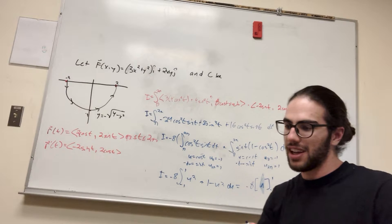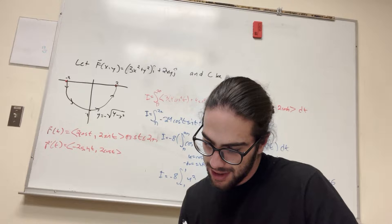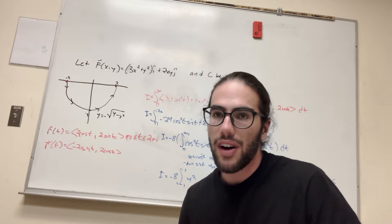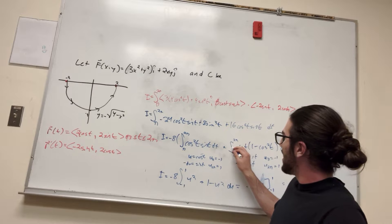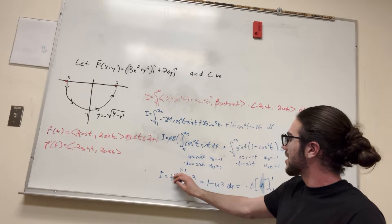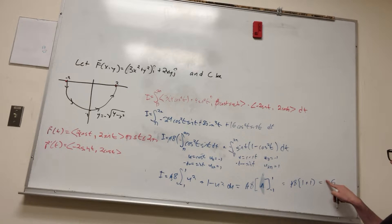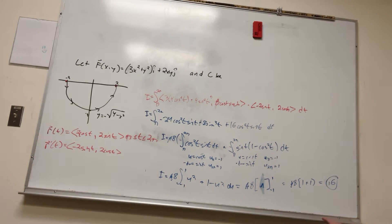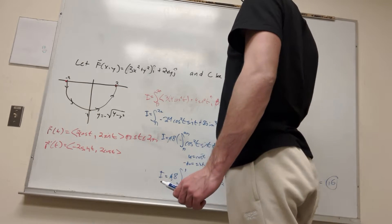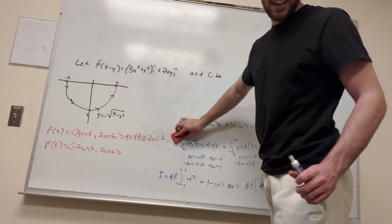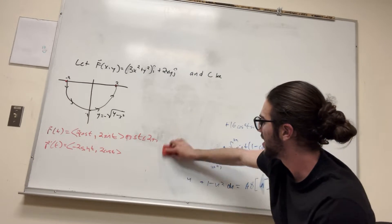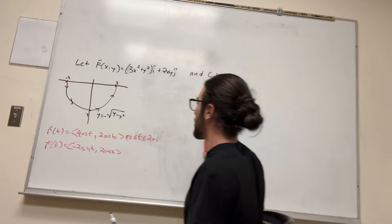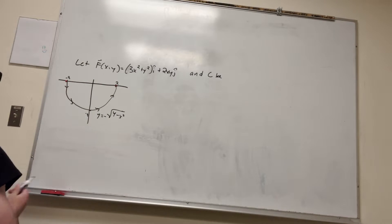Let me double-check that and make sure I got it right. I forgot to carry through the negative from du equals negative sine t, which cancels the existing negative. So the negatives cancel out — it's positive 16. Forgive me, I've solved this three times now and got it wrong after the third time. So we found 16 using the long roundabout way. I would not recommend doing this. Now I'm going to use the Fundamental Theorem of Calculus and show you how much easier it is.